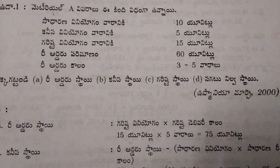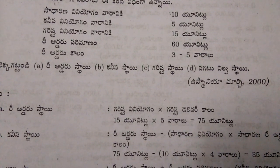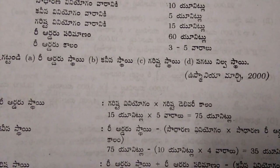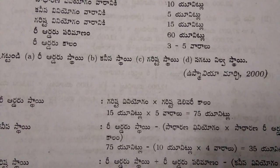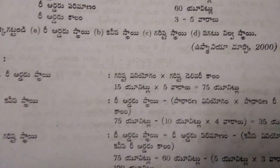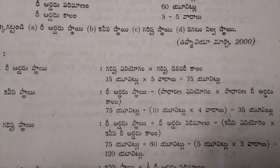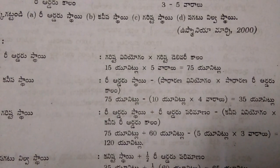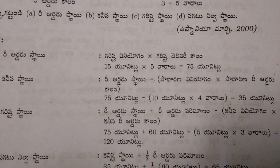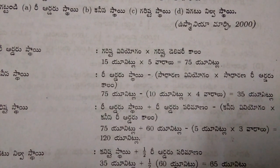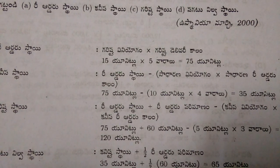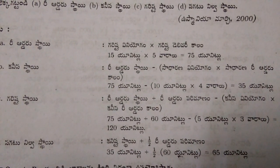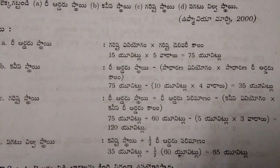Calculate reorder level, minimum level, maximum level, and average level. Reorder level equals maximum consumption into maximum delivery time, that equals 15 into 5 weeks, which is 75 units.